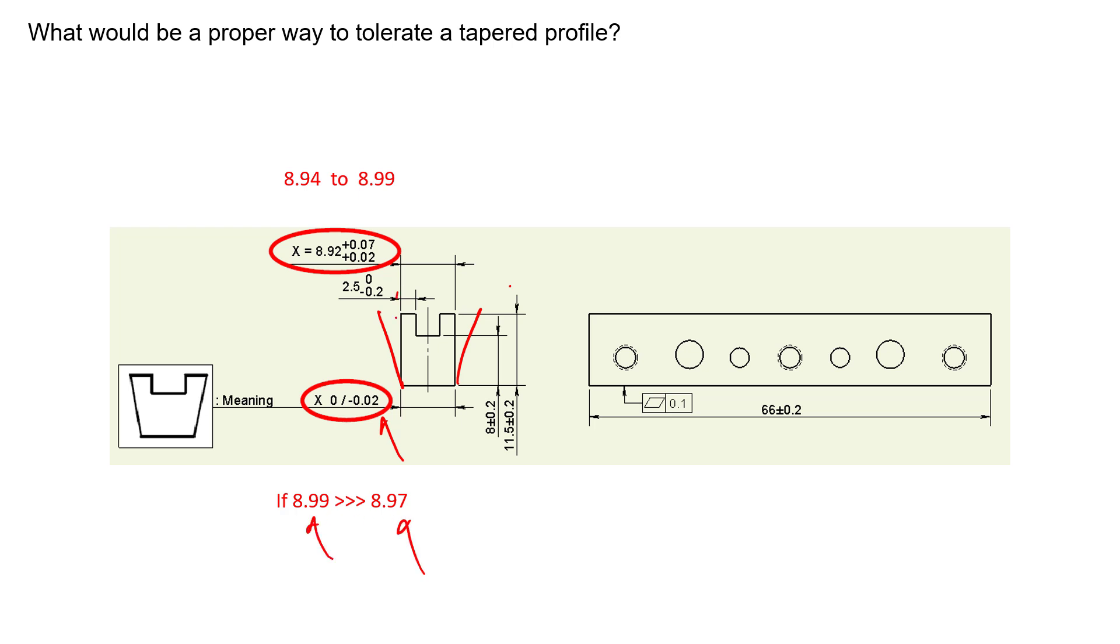We'd rather only allow so much taper that it goes down by 20 microns. So if it measured at 8.99 at the top, it can only taper down to 8.97 at the bottom. If we measured at 8.94 at the top, we could taper up to 8.96 at the bottom, growing in width by 20 microns.